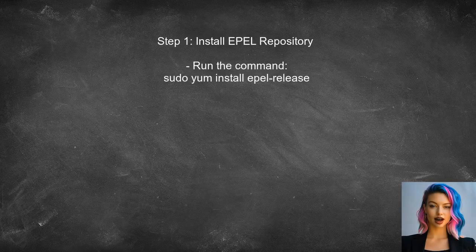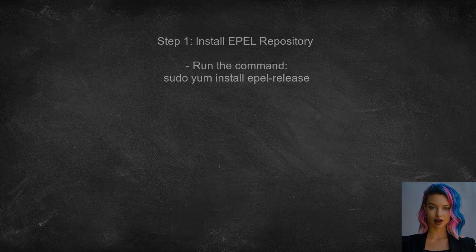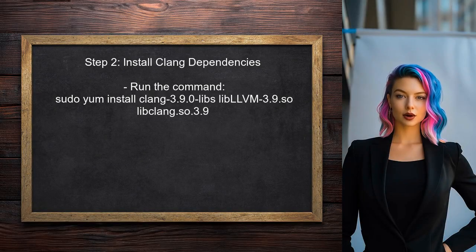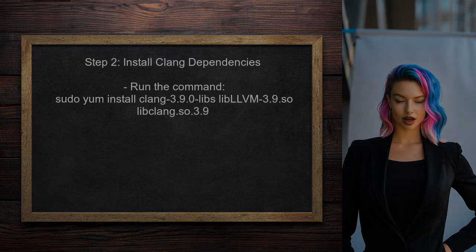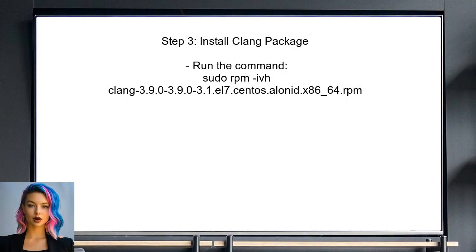To begin resolving the user's issue, we first need to install the required dependencies for Clang 3.9. The user can do this by using the EPEL repository, which provides additional packages for CentOS. Next, the user should install the necessary dependencies for Clang. This can be done by executing a single command that will install all the required libraries. After installing the dependencies, the user can proceed to install the Clang package again. This time, it should work without any dependency errors.